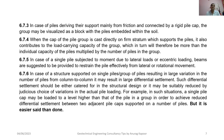Clause 6.7.3 of IS 2911 Part 1 Section 2 (2010) states that in case of piles deriving their support mainly from friction and connected by a rigid pile cap, the group may be visualized as a block with the piles embedded within the soil. Clause 6.7.4 states that when the cap of the pile group is cast directly on a firm stratum which supports the piles — meaning the superstructure weight is borne by both pile friction/bearing and the pile cap resting on a hard bearing stratum — the cap also contributes to the load carrying capacity of the group, which will therefore be more than individual pile capacities multiplied by the number of piles.